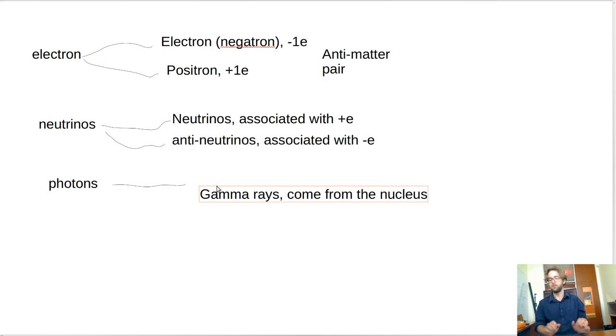So as we'll see later on in this course, the nucleus of an atom will sometimes release a photon under certain situations. And in those cases, this is called a gamma ray.